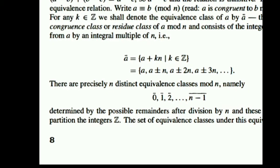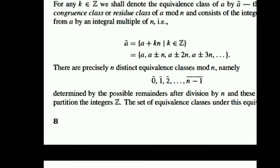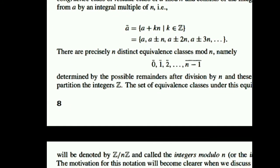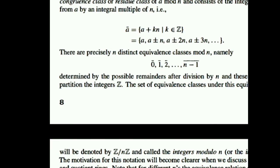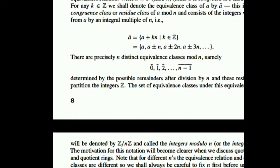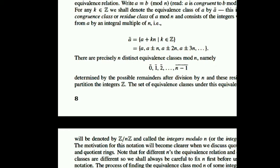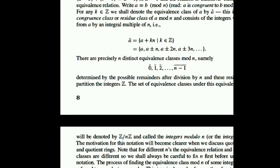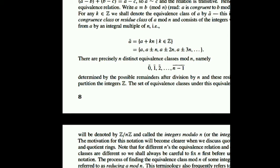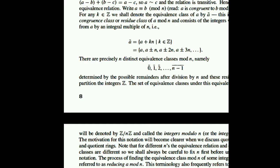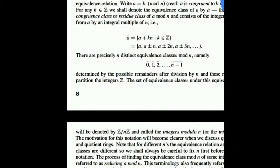Precisely there are n distinct equivalence classes mod n: class 0, class 1, class 2, up to class n minus 1. Basically we can think of a clock having n hours. We start from 0, 1, 2, up to n minus 1. Whenever the clock hand is at n, it will be again 0.